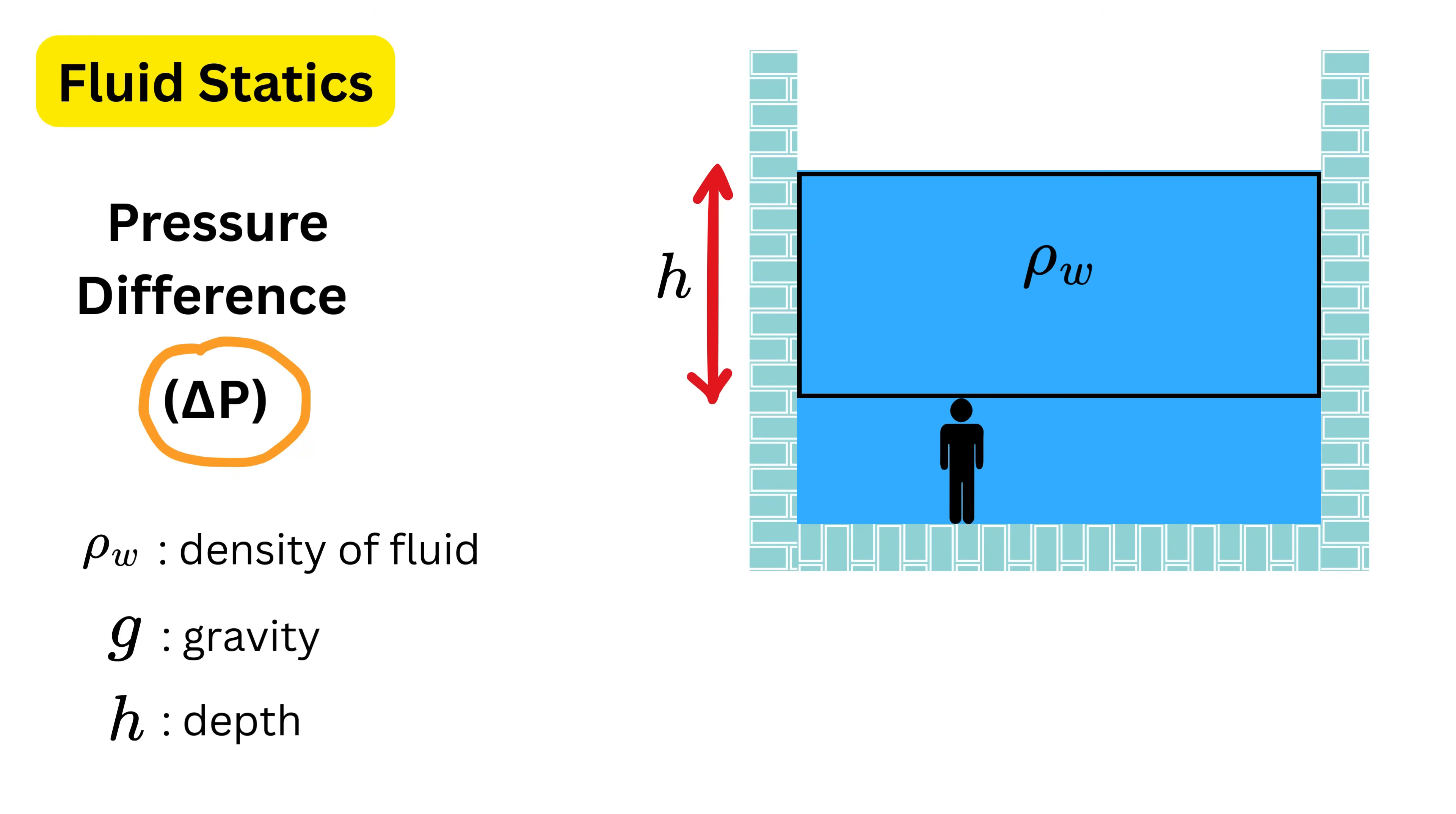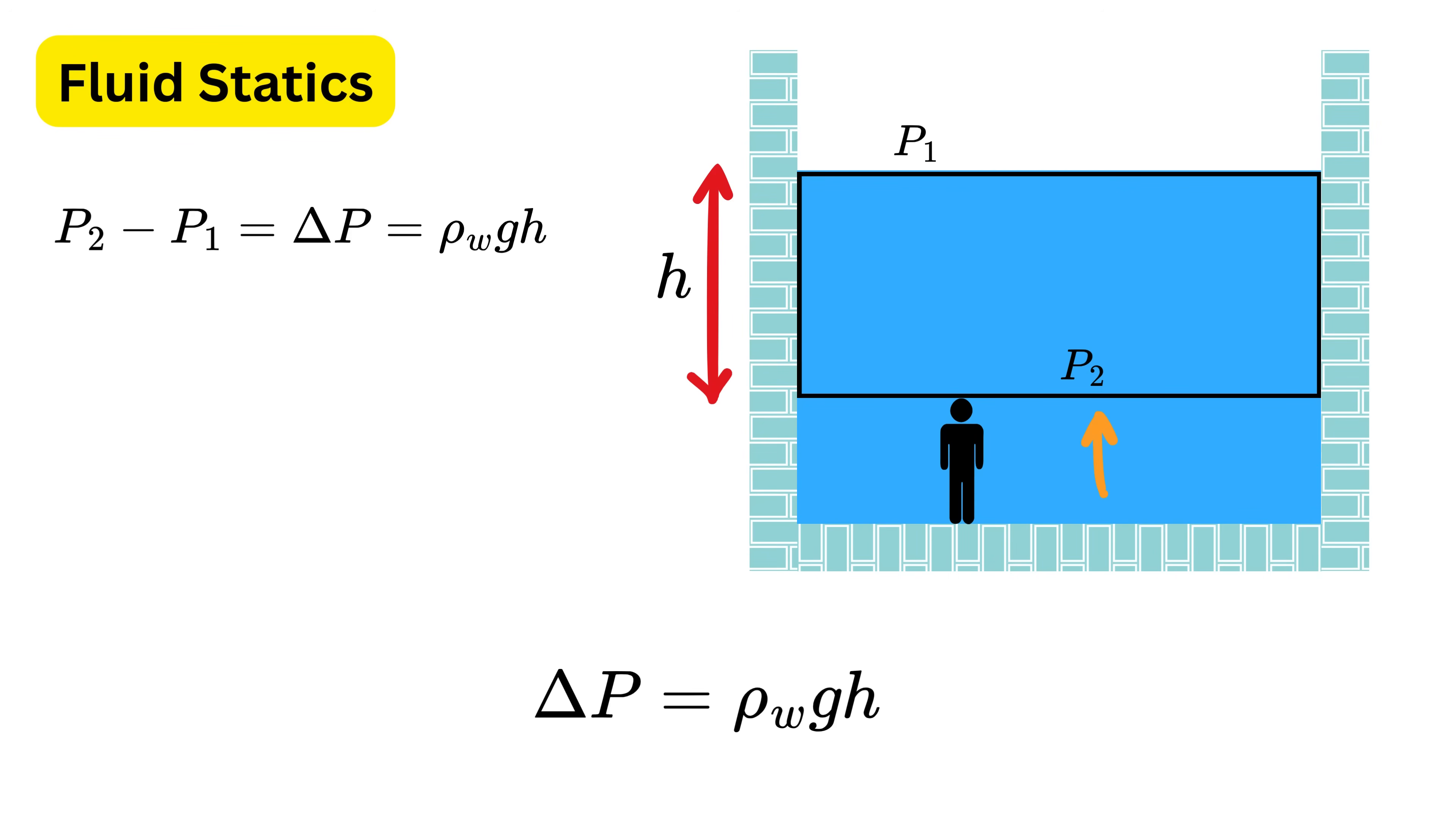Because of this, the extra pressure created by the water itself is equal to rho w times g times h. So if we have pressure p1 here and p2 here, then p2 minus p1 will be equal to this extra pressure delta p. This extra pressure delta p that arises purely because of the weight of a fluid at rest is called hydrostatic pressure.